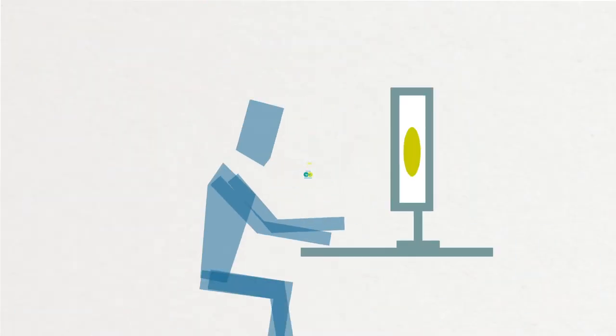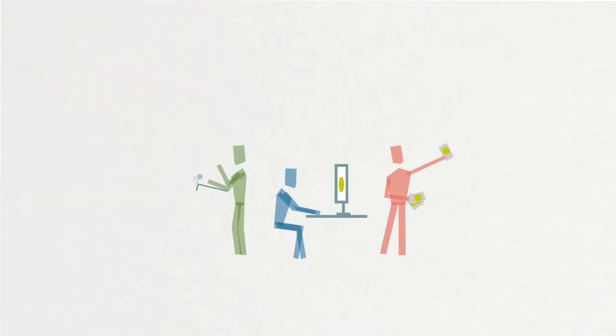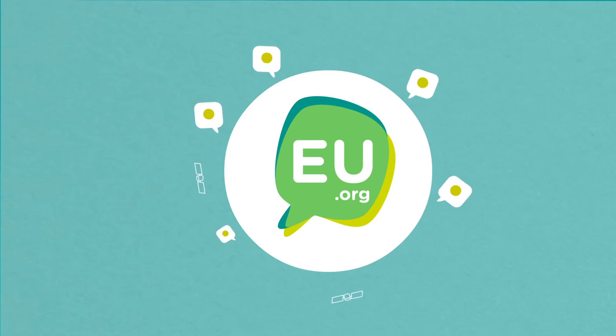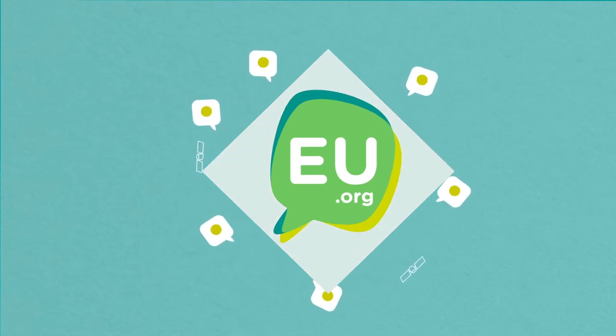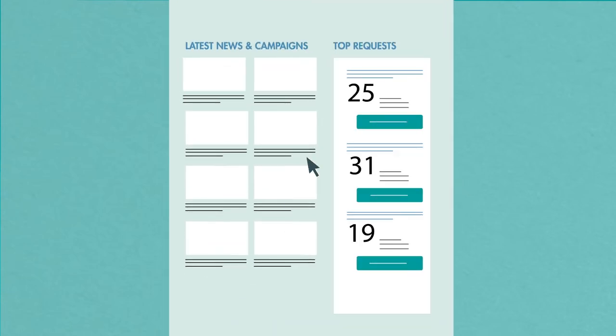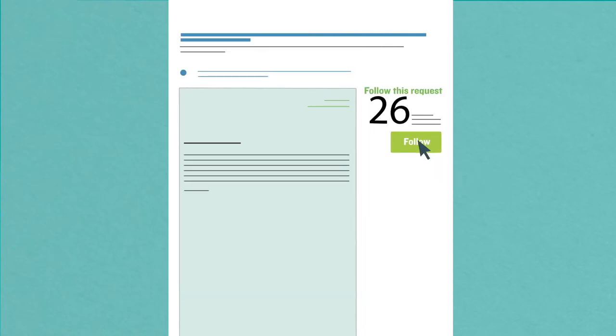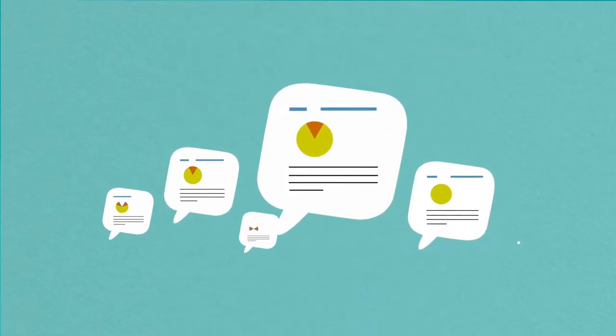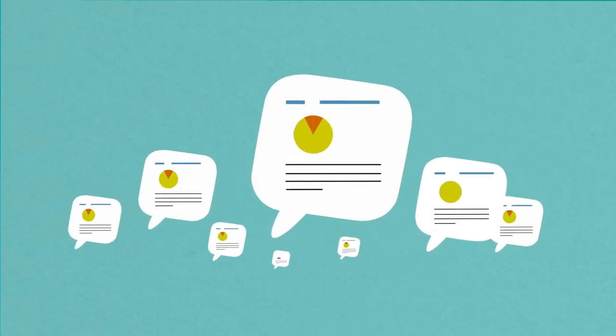Campaigns for more transparency. If you or your organisation are working on a public interest issue and you have requested information from the EU, you can create your own transparency campaign on AskTheEU.org. You can use this page to promote and generate support from the public for access to the documents you have requested. All you have to do is send us the information and your logo to put on the campaign page. We think it is also important to show the public interest in the information you request from the EU, which is why we have created a campaign widget for you to embed in your website.